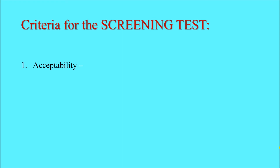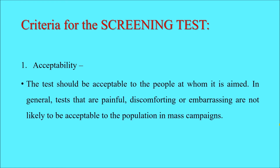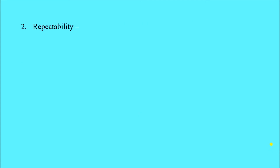The first criterion for a screening test is acceptability — as the name suggests, the test should be acceptable to all. It should be acceptable to the people at whom it is aimed. Tests that are painful, discomforting, or embarrassing are not likely to be acceptable in a mass campaign. For example, to screen for cervical cancer, a woman would need to attend a mass campaign where a paravaginal examination is performed — visual inspection with acetic acid. This may not be acceptable to many women in a mass campaign setting.